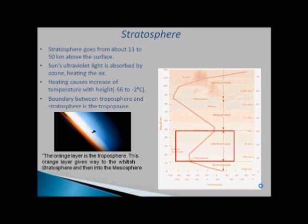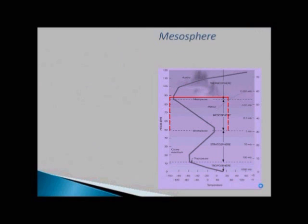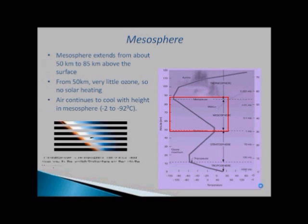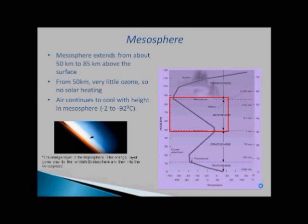Third region of atmosphere is mesosphere. And it extends from about 50 kilometers to 85 kilometers above the surface. From 50 kilometers, very little ozone is present. That's why there is no solar heating and thus temperature falls from minus 2 to minus 92 degrees centigrade. You see in the figure, the orange layer is the troposphere. This orange layer gives way to the whitish stratosphere and then into the mesosphere.